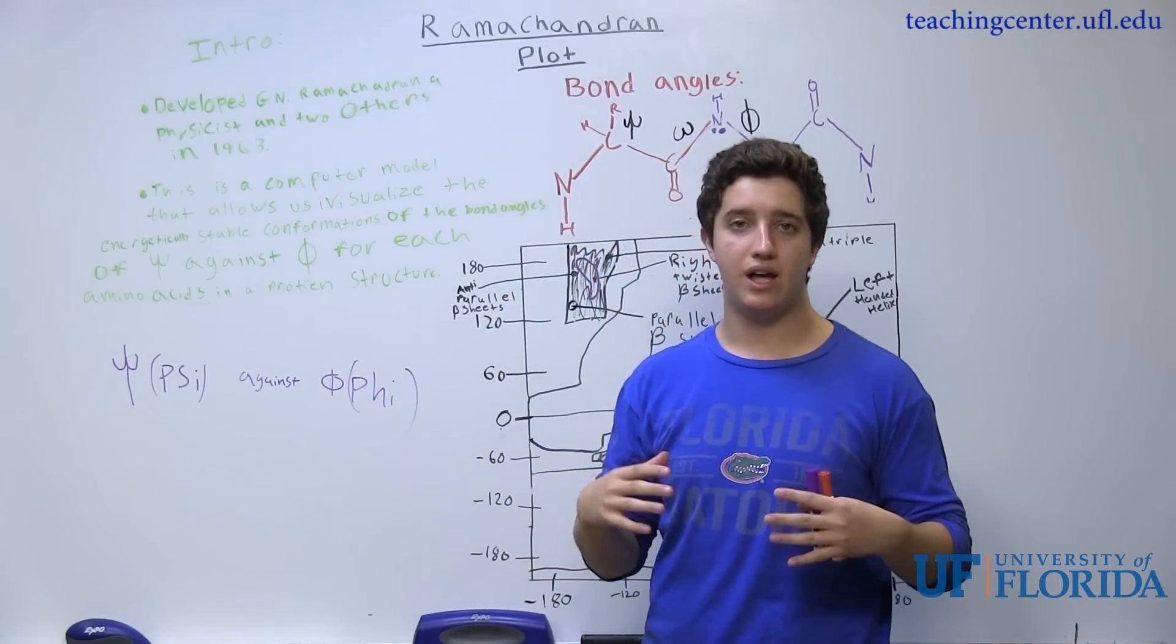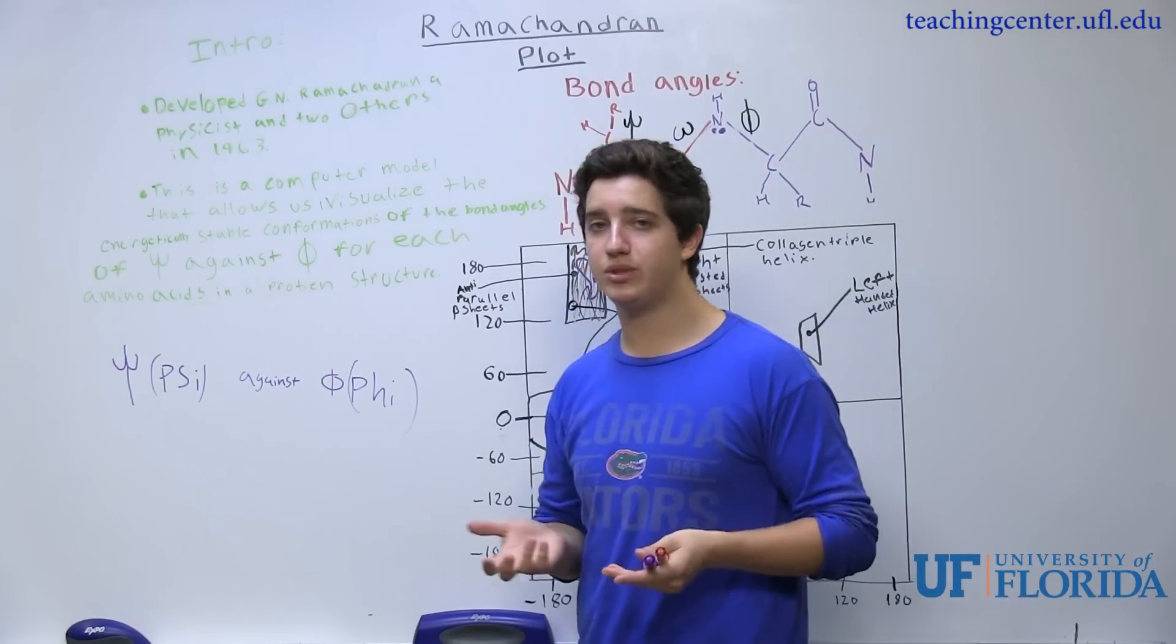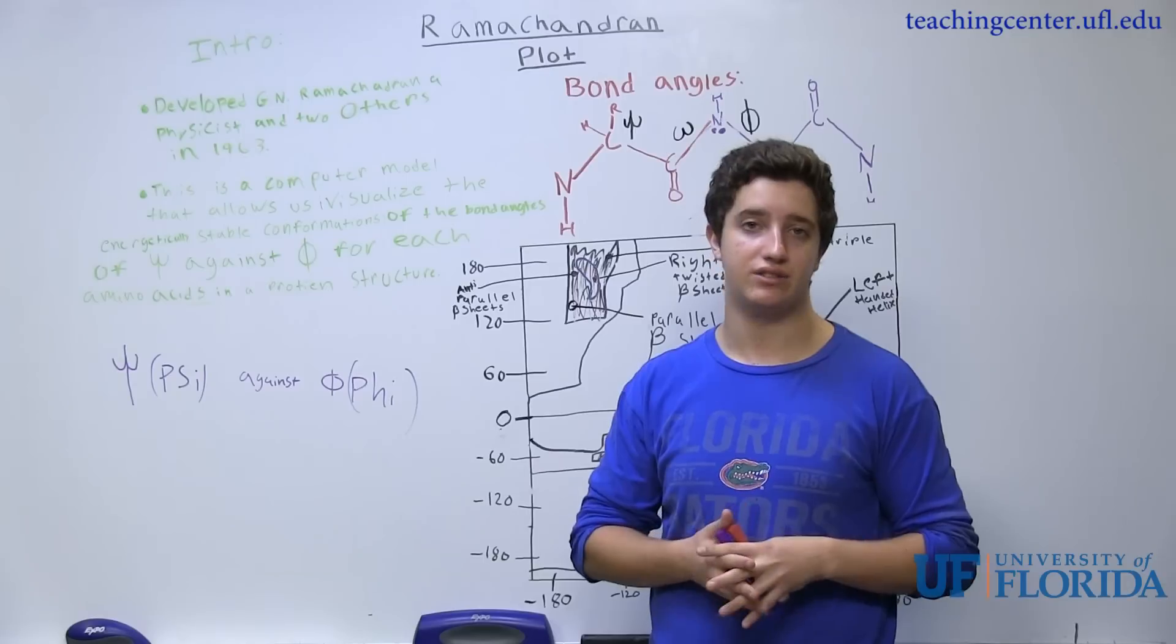It's important to remember that this plot is going to be plotting psi against phi. To understand the Ramachandran plot, we must first look at the bond angles of the amino acid residues.